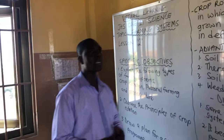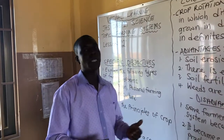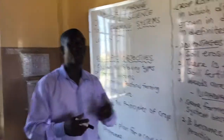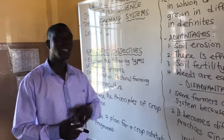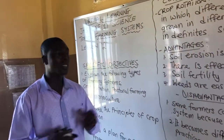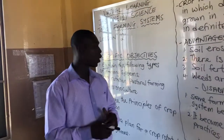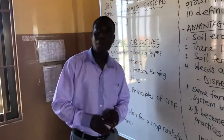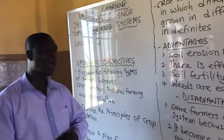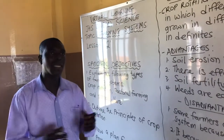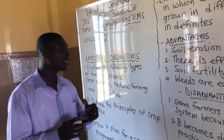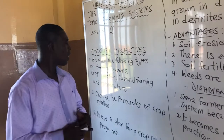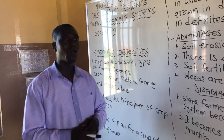Monoculture is a type of farming system in which a particular type of crop is repeatedly grown on a piece of land year after year or season after season. For example, if a farmer is planting yam, yam continues to be planted on the farm — he continues to plant it year or season after season. That is monoculture.